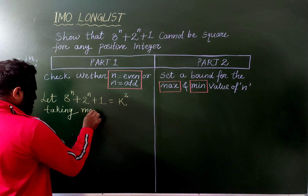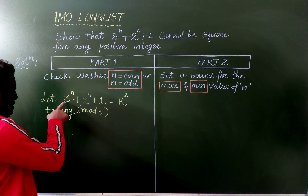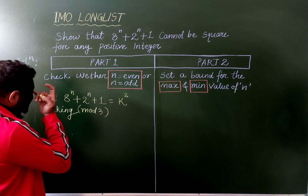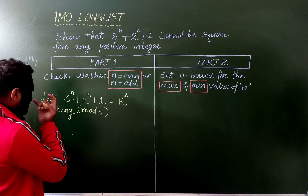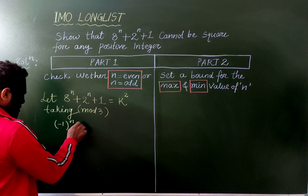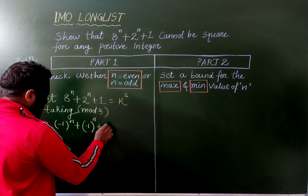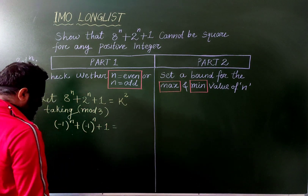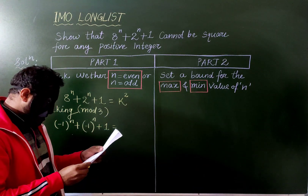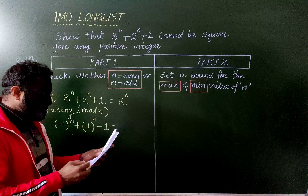Taking mod 3: we know that 8 mod 3 is −1, so 8^n mod 3 is (−1)^n. Similarly, 2^(n+1) mod 3 is also (−1)^(n+1).